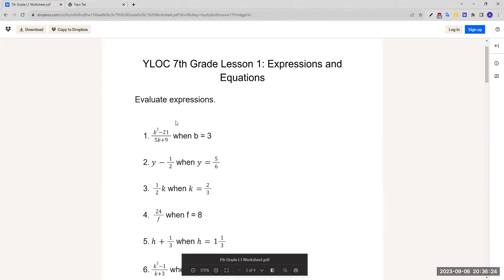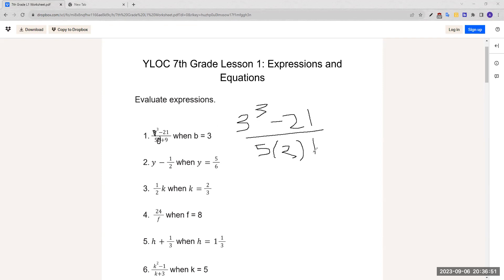For number 1, b cubed minus 21 over 5b plus 9, b equals 3. When b equals 3, that means wherever b is, we substitute 3. We see that there's a b here and a b here. So we plug that in: 3 cubed minus 21 over 5, parentheses, 3 plus 9.